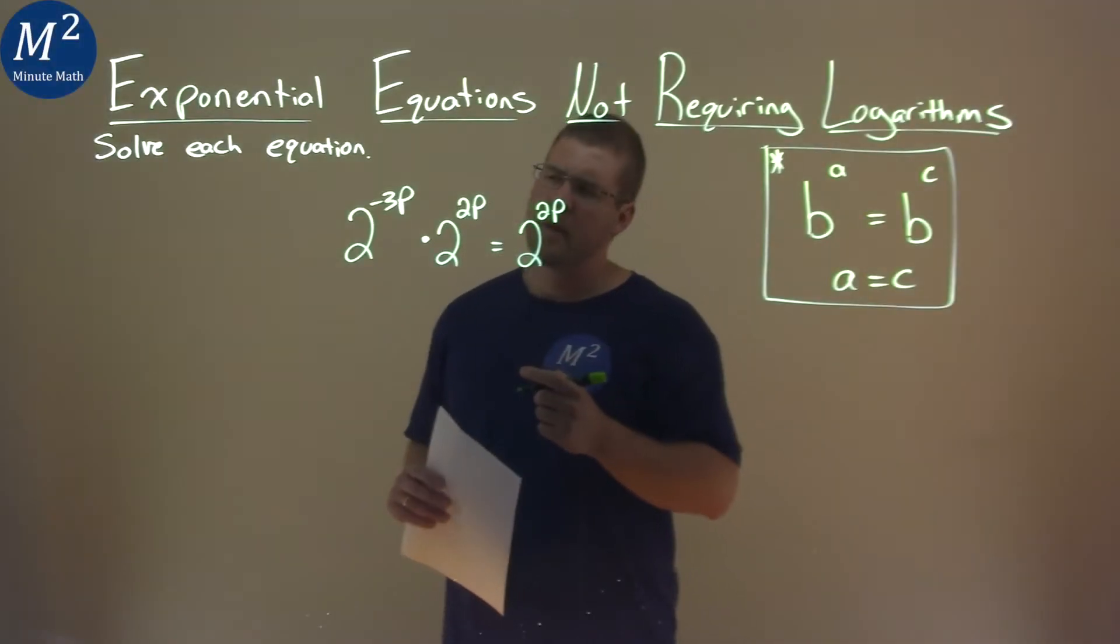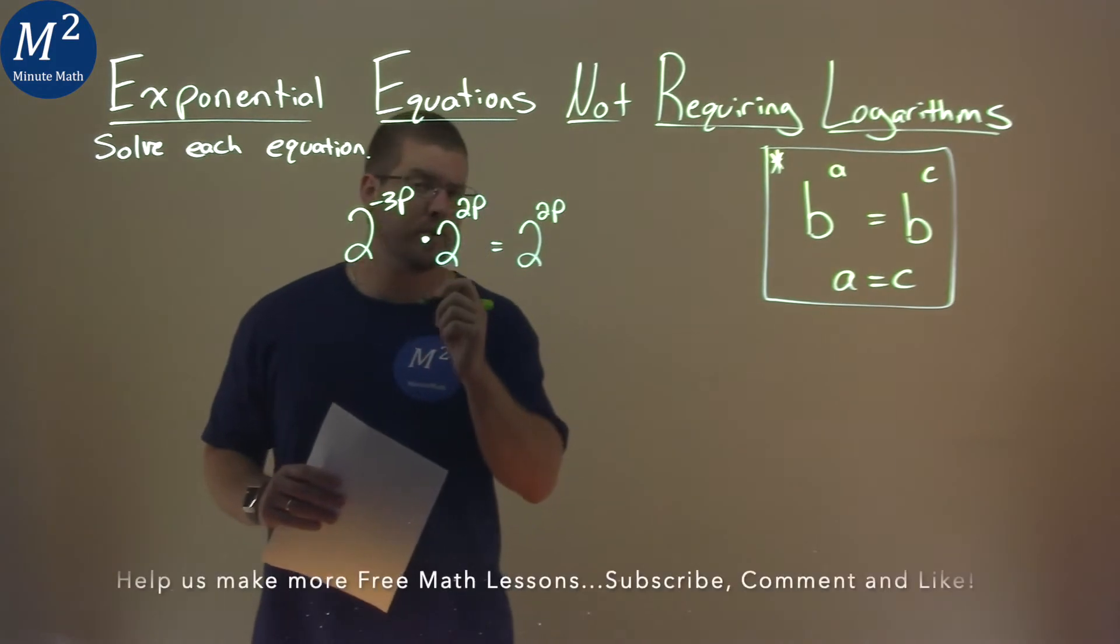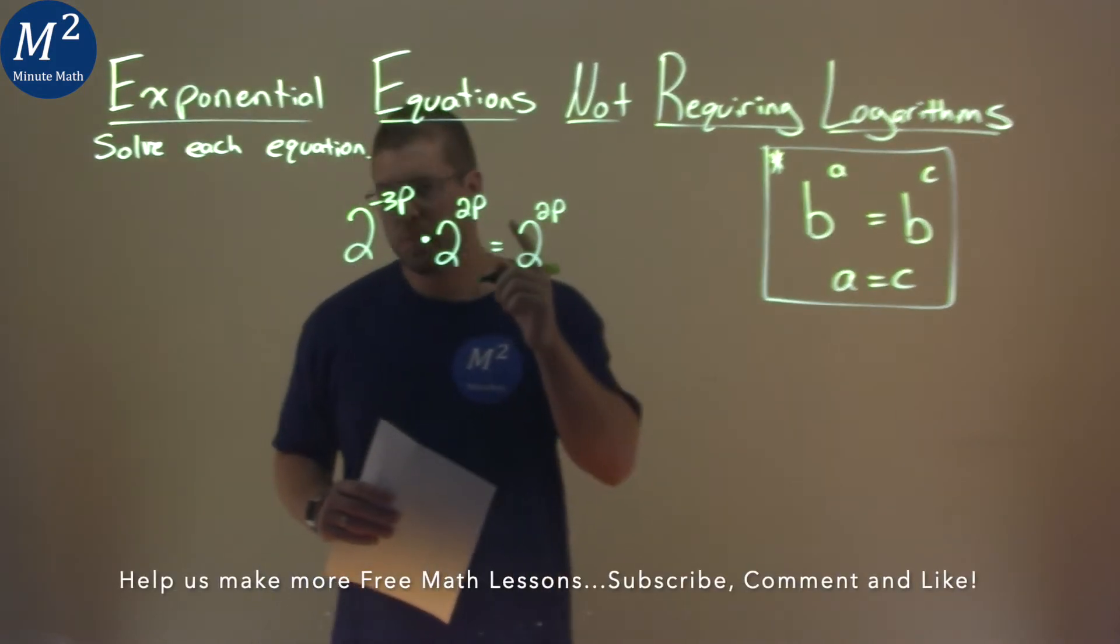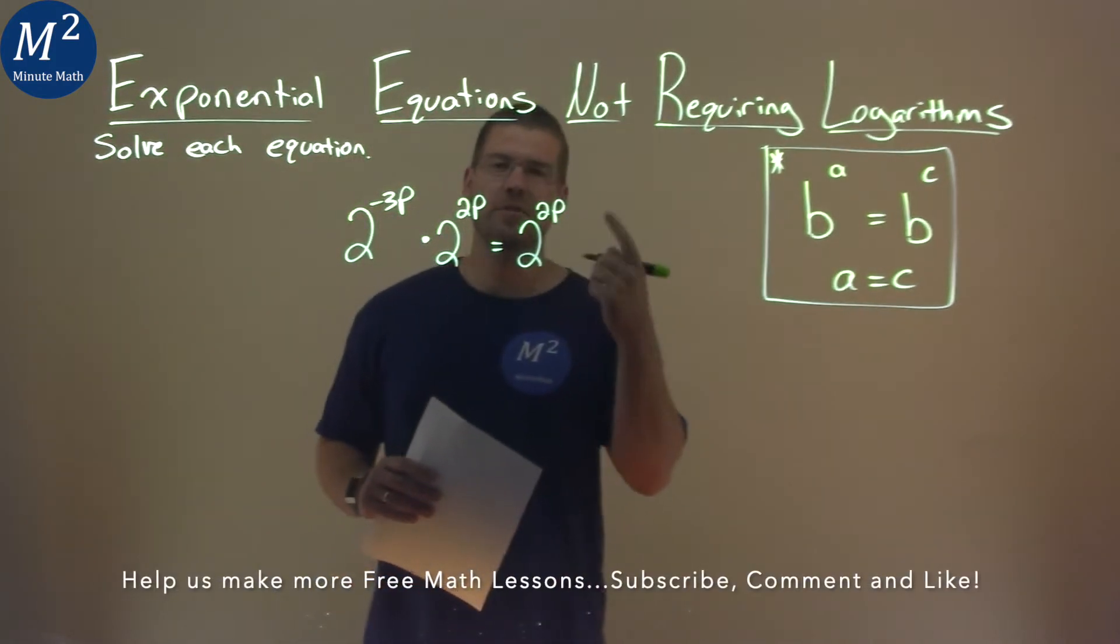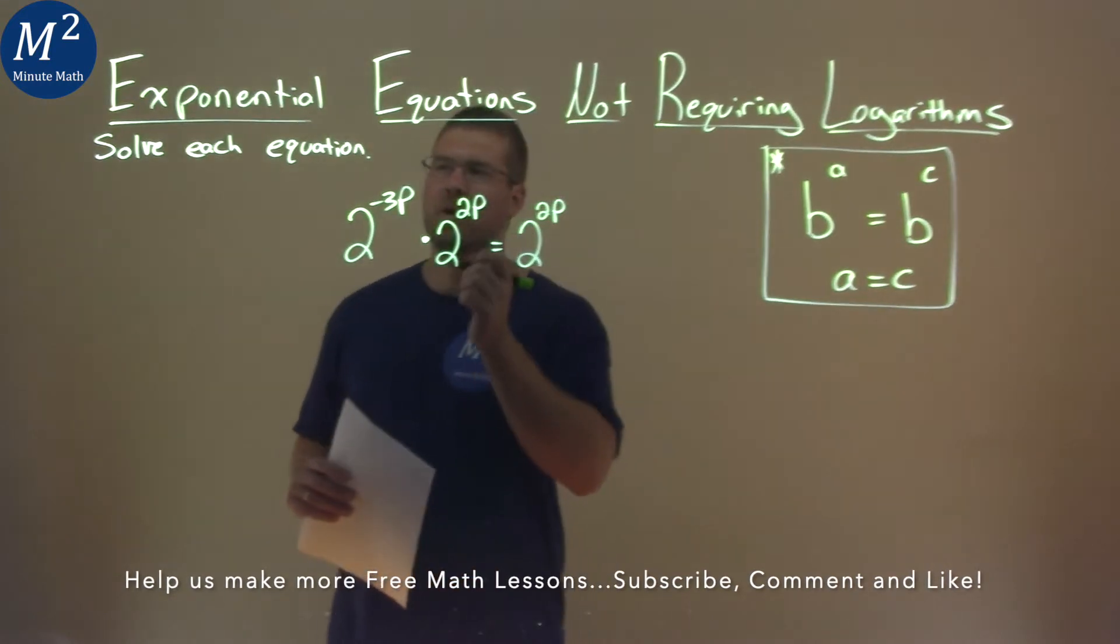We're given this problem right here. 2 to the negative 3p power times 2 to the 2p power is equal to 2 to the 2p power, and we want to solve this equation.